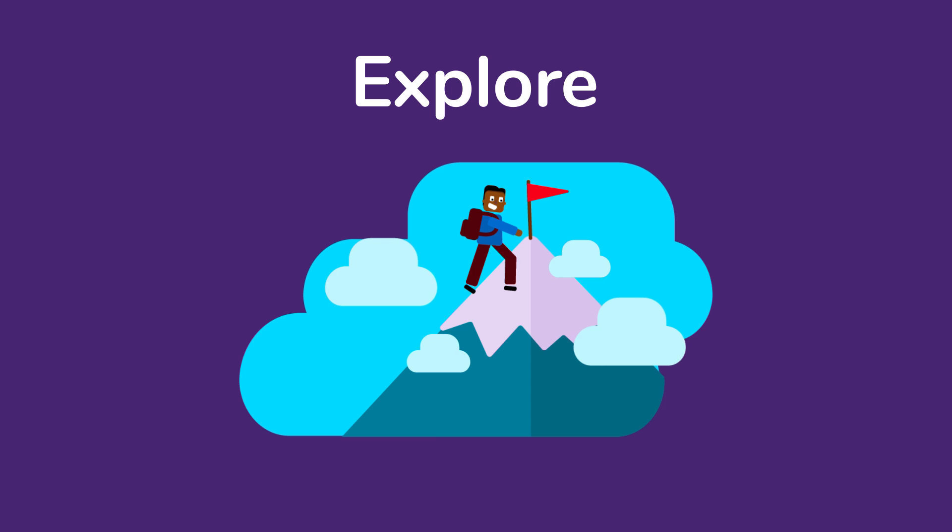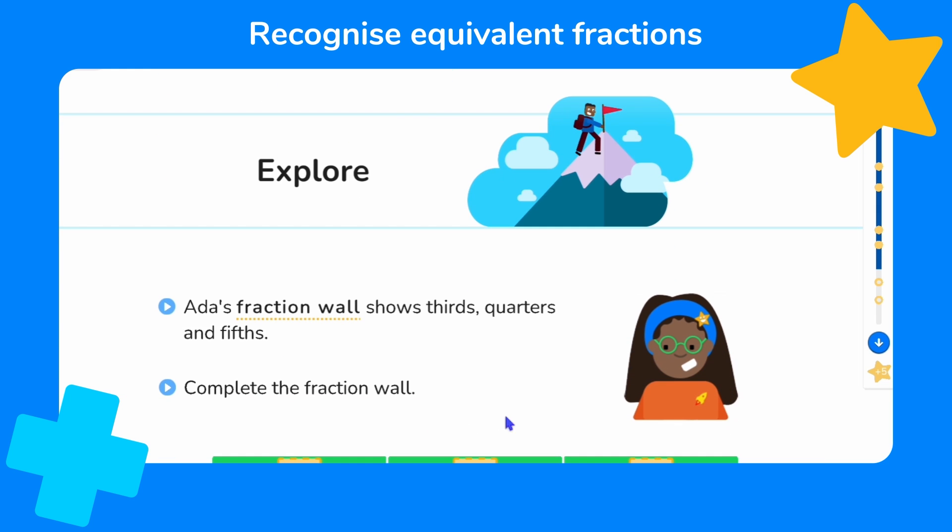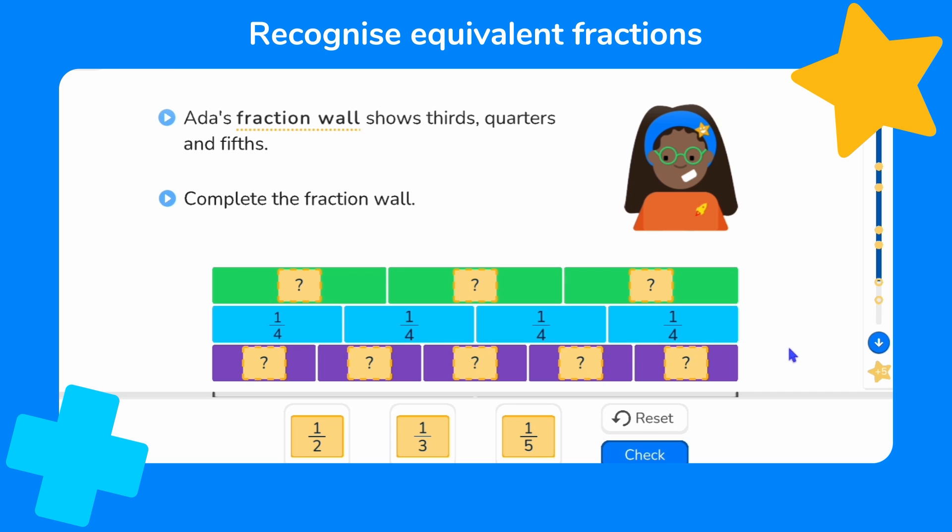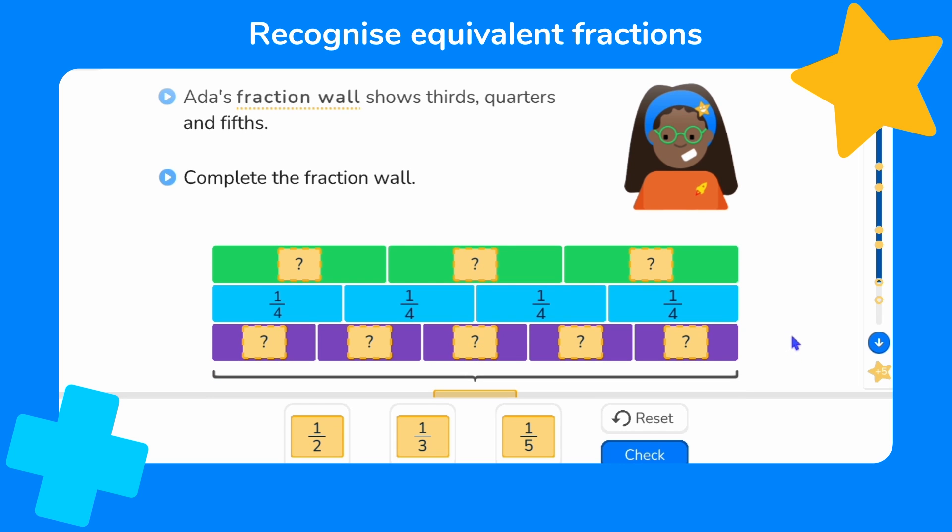Now let's explore some different equivalent fractions with Ada. Ada's fraction wall shows one half. How confident are you feeling today about thirds and fifths? I can tell you that one third is one out of three equal parts. So this fraction labels these parts here. See the whole has been divided into three equal parts? And this is the fraction one-third.